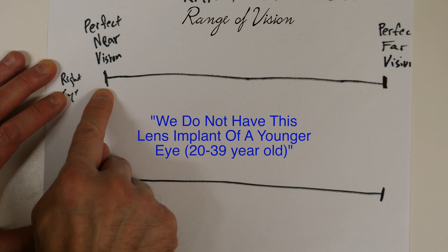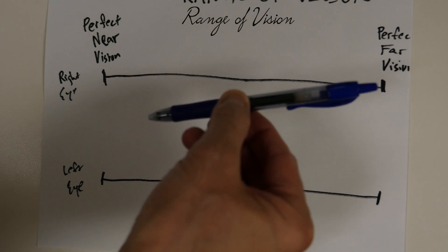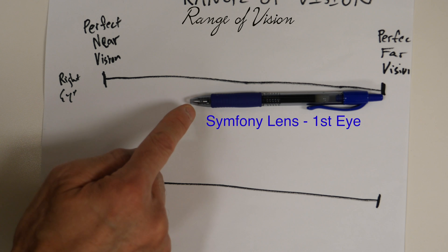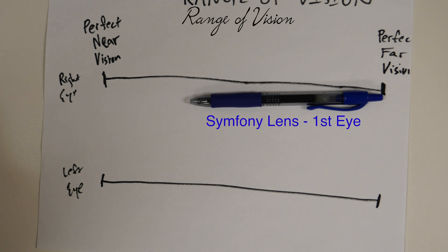We do not have this lens. It does not exist. So if you have a Symphony lens, it is not perfect. You will see about this range. You will see far and you will see near, but you will not see perfectly near. You might need some reading glasses.